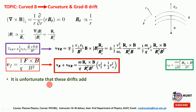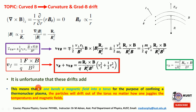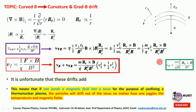Unfortunately, the two drifts add together. This means that if one bends a magnetic field into a torus for the purpose of confining a thermonuclear plasma, the result is that the particles will drift out of the torus no matter how one adjusts the temperature and the magnetic field. More curvature means more drift.